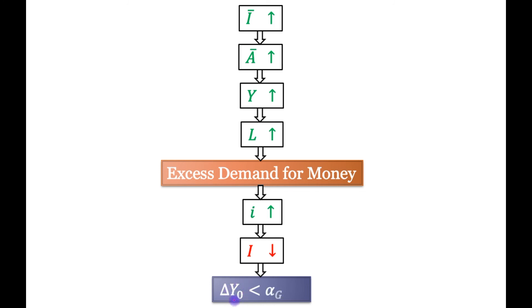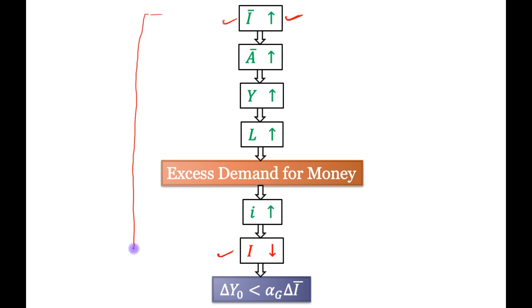Therefore, the change in equilibrium income is less than the horizontal shift of the IS curve. The reason is: when we consider the horizontal shift of the IS curve, we focus only on the increase in autonomous investment (ΔĪ). But when we consider the change in equilibrium income, we account for both the increase in Ī and the decrease in induced investment due to the higher interest rate. Considering both effects is the only reason that the change in equilibrium income is less than the horizontal shift of the IS curve.